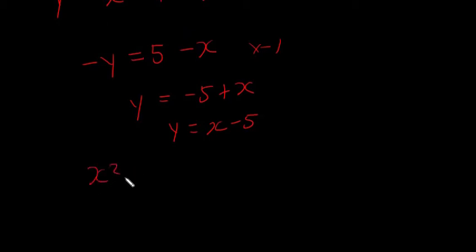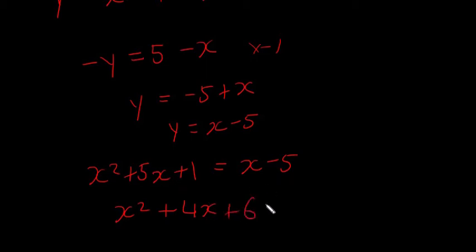So we have x squared plus 5x plus 1 is equal to x minus 5, that's going to give us x squared plus 4x. So I'm going to bring this x over, it'll be negative, we're going to end up with 4x over here, and it's going to be plus 6 is equal to 0. So again, we have a quadratic here, so we want to find the solutions to the quadratic, the roots of the quadratic, and that'll give us the crossing points of our curve and our line.